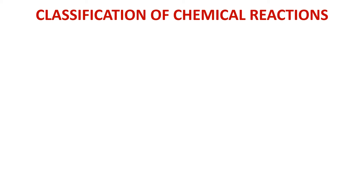Another way of classifying animals is as diurnal and nocturnal. Diurnal means those animals who are active during the daytime — D for diurnal, D for daytime. Nocturnal animals are those who are active during the night time — N for nocturnal, N for night time. That is the second way of classifying animals.